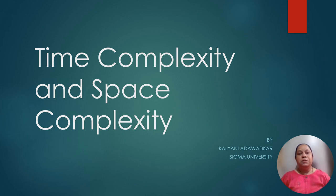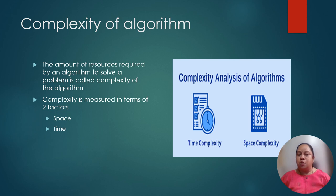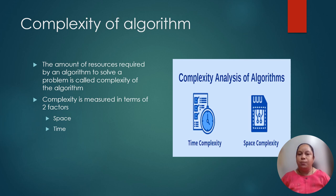Hello everyone. Today we will be seeing the second topic of the first unit, that is time complexity and space complexity. First of all, let us understand what is the complexity of an algorithm. The amount of resources required by an algorithm to solve a problem is called as the complexity of the algorithm. This complexity is measured in terms of two resources: one is time and another is space. Whenever we write any algorithm or program to solve a problem, the amount of space and time required by the program is the complexity of the program.